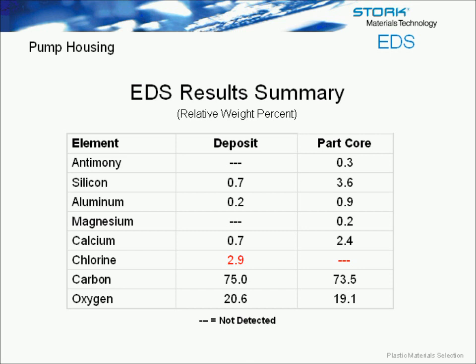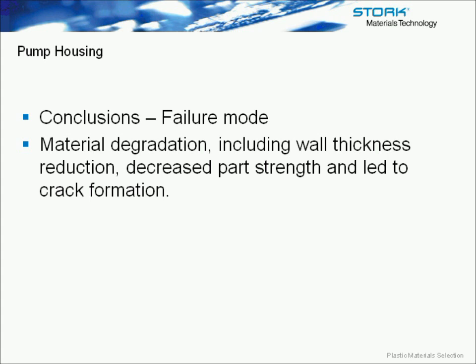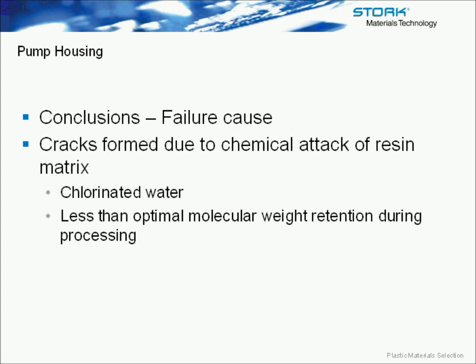EDS analysis of the deposit versus a part core basically showed a surprising level of chlorine. It is a chlorinated water application, but to have that much chlorine present in that deposit was considerable. So at the end of the analysis, we basically determined that the material was degraded — via the melt flow rate results and looking at the fracture surface showing the mud cracking. What happened is basically the wall thickness of the part was being reduced due to its chemical compatibility issues with the chemical inside. As you decrease the wall thickness and start degrading the material, this leads to decreased part strength and basically resulted in crack formation. The cause of failure was determined to be due to chemical attack of the resin, which is characteristic of the mud cracking.